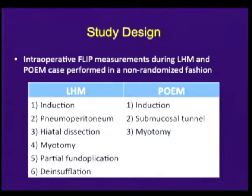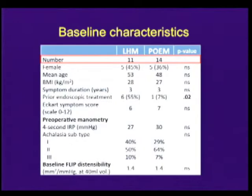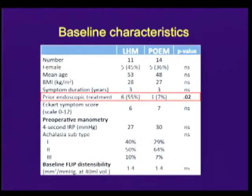Operative measurements with FLIP were taken at six time points during Heller and three time points during POEM, owing to the fact that POEM does not involve insufflation of pneumoperitoneum, hiatal dissection, esophageal mobilization, or partial fundoplication. Measurements were performed in 11 Heller patients and 14 POEM patients. Patients were similar preoperatively, except that more Heller patients had undergone prior endoscopic treatment with either Botox or dilation.